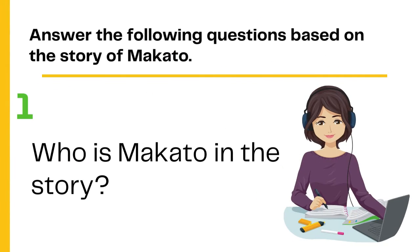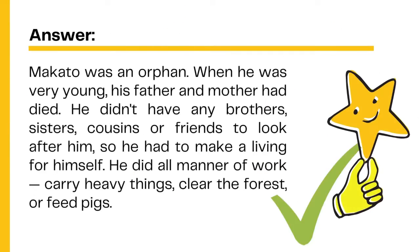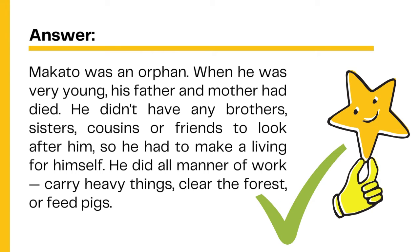Now let's answer the following questions based on the story of Makato. Number 1: Who is Makato in the story? Correct! Makato was an orphan. When he was very young, his father and mother had died. He didn't have any brothers, sisters, cousins, or friends to look after him, so he had to make a living for himself. He did all manner of work — carry heavy things, clear the forest, or feed pigs.